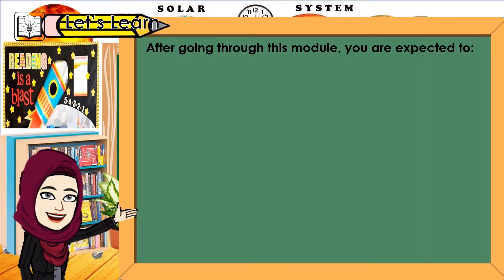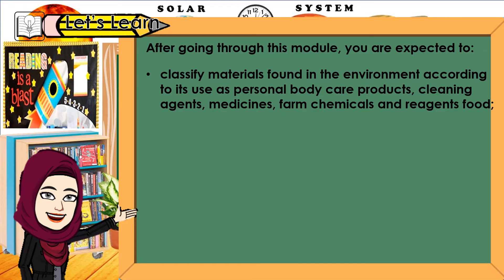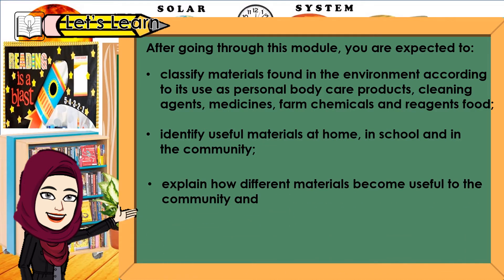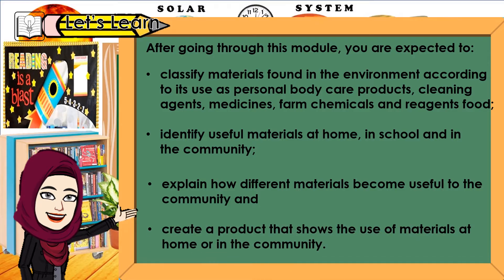After going through this module, you are expected to: 1. Classify materials found in the environment according to their use as personal body care products, cleaning agents, medicines, farm chemicals, and reagents food. 2. Identify useful materials at home, in school, and in the community. 3. Explain how different materials become useful to the community and create a product that shows the use of materials at home or in the community.